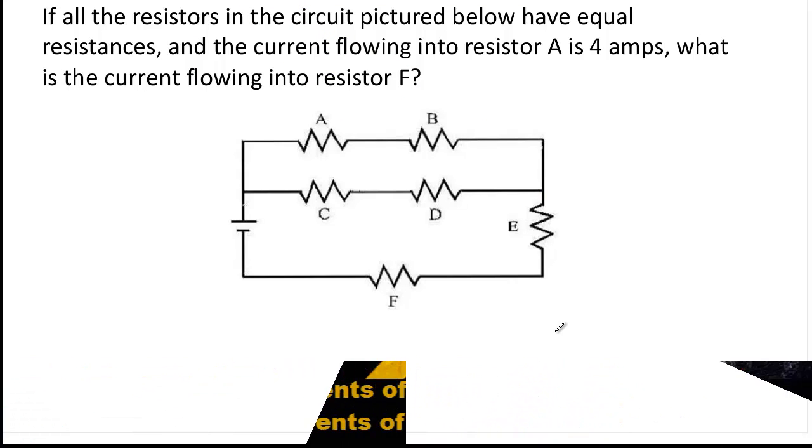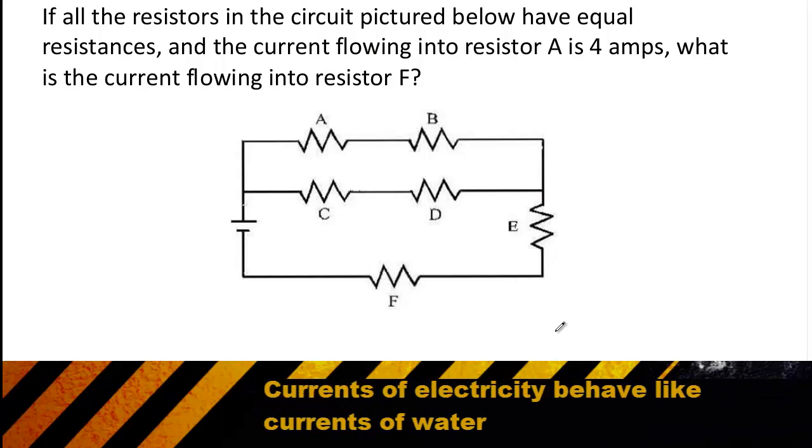This question is an excellent example of how current behaves differently in parallel and series resistors. Initially we have a current of 4 amps, but then there's a fork or a split in the wires creating a set of parallel resistors. If you could imagine the current in a resistor to be just like the current in a river, if a river is flowing and then that river forks and goes in two directions,